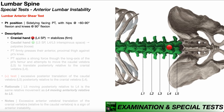My cranial hand, designated in red, is going to be on the L4 spinous process. It is going to stabilize L4 and hold it firmly to prevent L4 from moving. My caudal hand, designated in green, is going to be on the L5 spinous process and also the L4-L5 interspinous space.